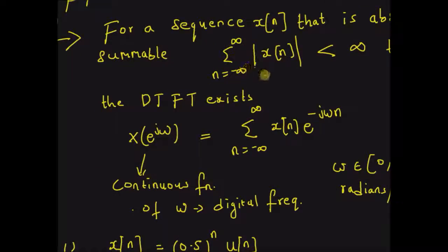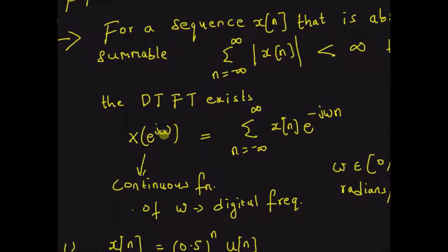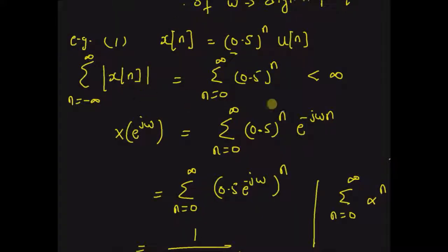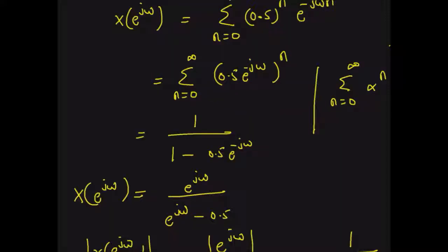To summarize: for a sequence x of n, if it is absolutely summable — that is, if the sum of its absolute values is less than infinity — then the DTFT exists and is given by the formula, which is a linear combination of the sequence with the exponentials e to the power minus j omega n. The DTFT is a continuous function of the digital frequency omega, and we can use this definition to calculate the DTFT of absolutely summable sequences such as 0.5 to the power n times u of n. Thanks for watching.